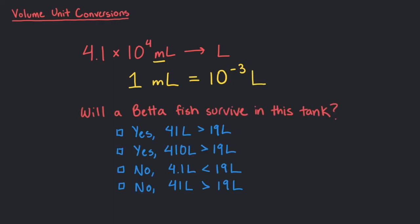Lastly, to make a fair comparison to 19 liters, we need to convert 41,000 milliliters to liters. Let's change our milliliters into scientific notation, which is 4.1 times 10 to the fourth milliliters. Remembering our prefixes, we know that each milliliter is 10 to the negative 3 liters. Try it out and see if our tank is suitable for a betta fish.